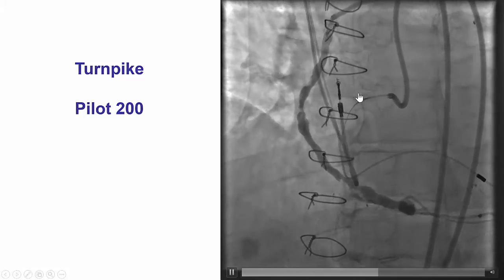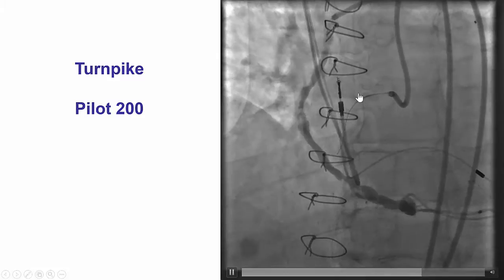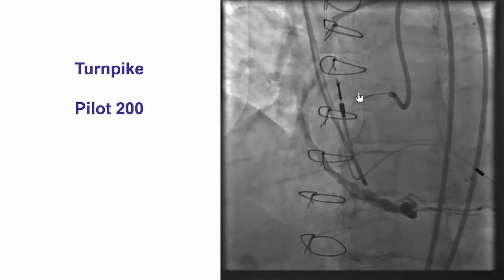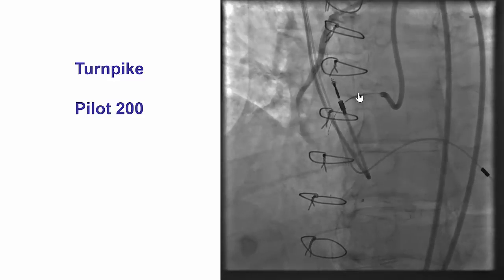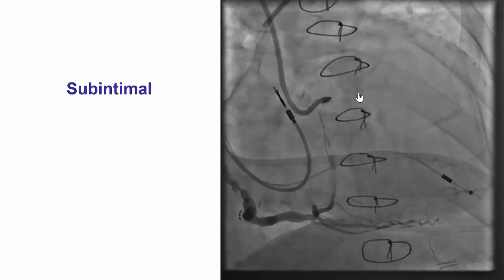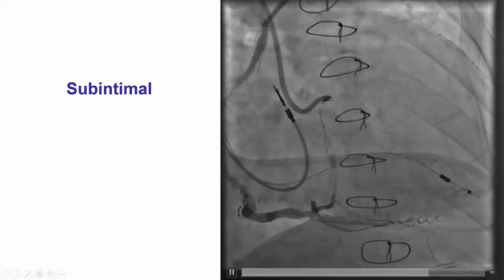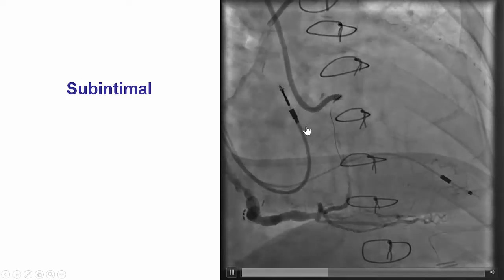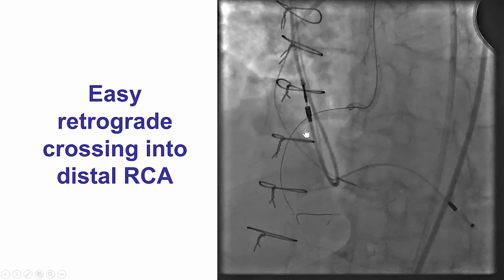Wire escalation was performed with a Turnpike microcatheter and a Pilot 200 wire; however, the wire did seem to go into the subintimal space, as confirmed from the RAO projection.